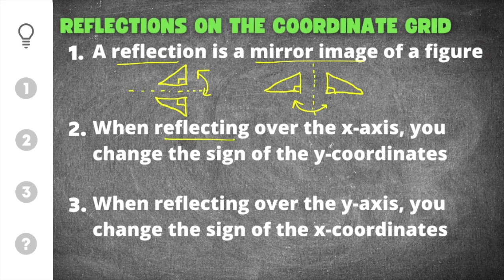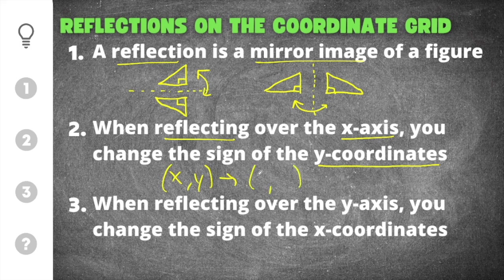When reflecting over the x-axis, you change the sign on the y-coordinates. When you're reflecting across the horizontal axis, the y-coordinate is going to change. Your x-coordinate will stay the same, and the sign on the y-coordinate will change. So if the y is positive, it'll become negative. If the y is negative, it'll become positive.